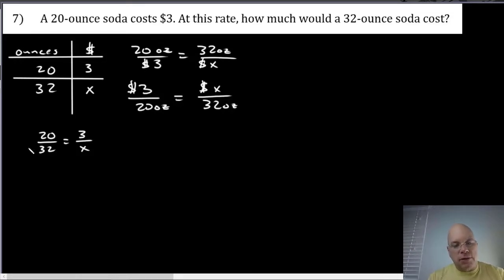If I took this proportion and rotated it 90 degrees counterclockwise, I would have 3 over 20. Here it is: 3 over 20 equals x over 32. You can set up a ratio table and label your units in your columns, or go directly to a proportion. But if you go directly to a proportion, just make sure you include the units.